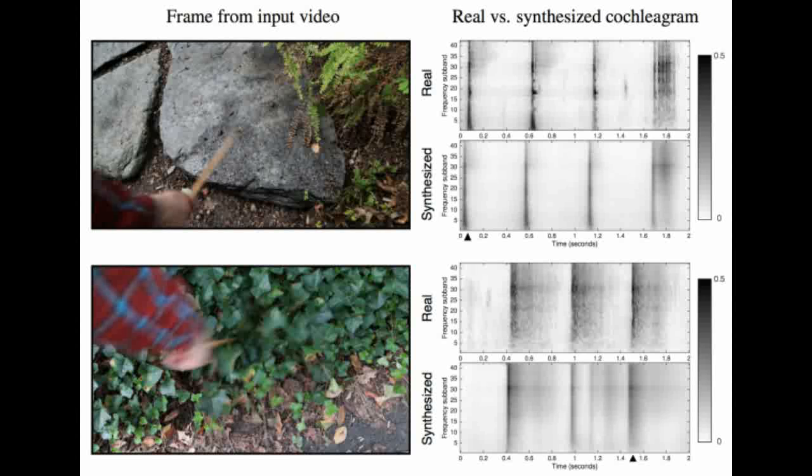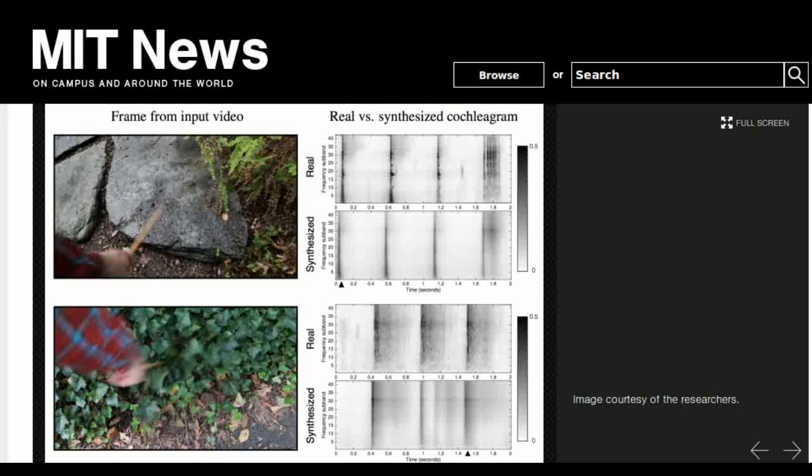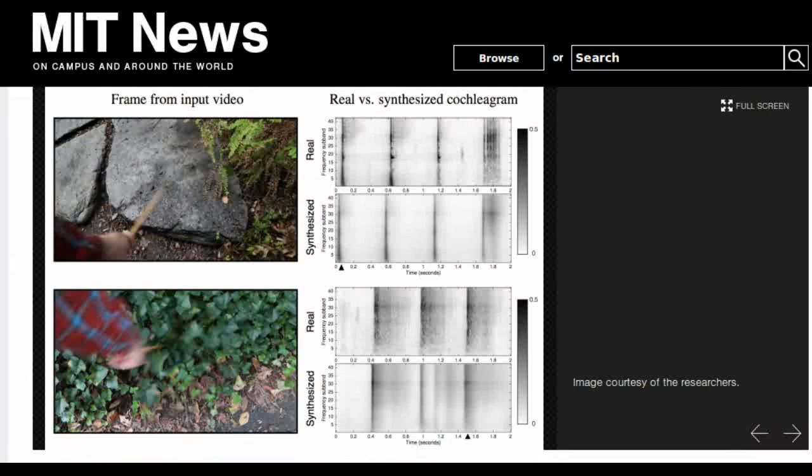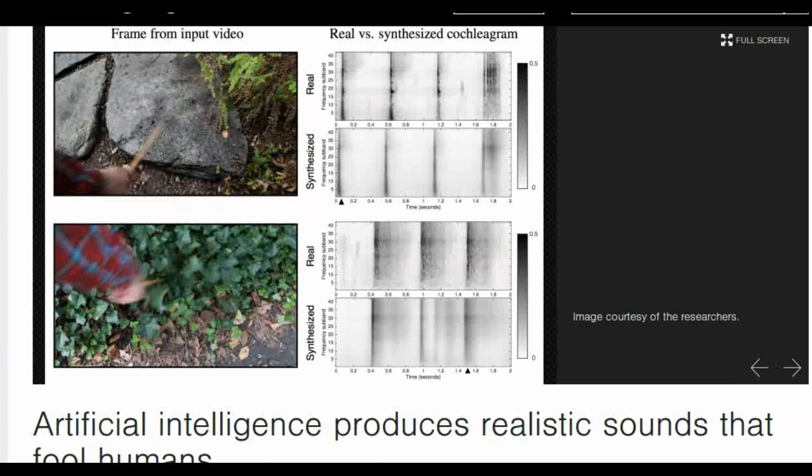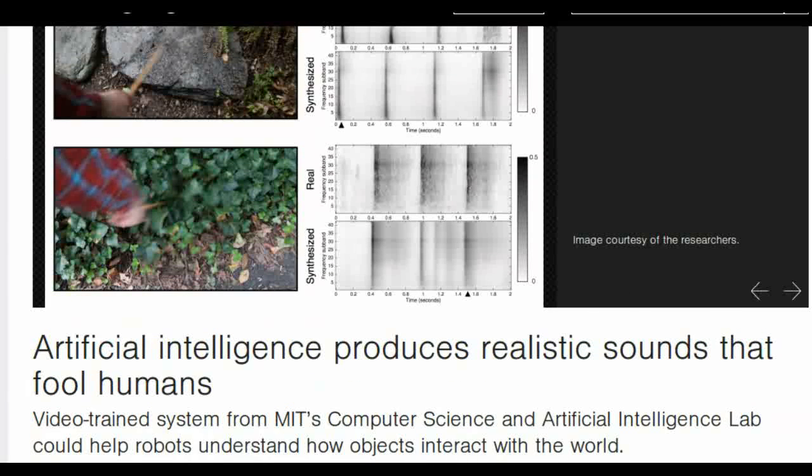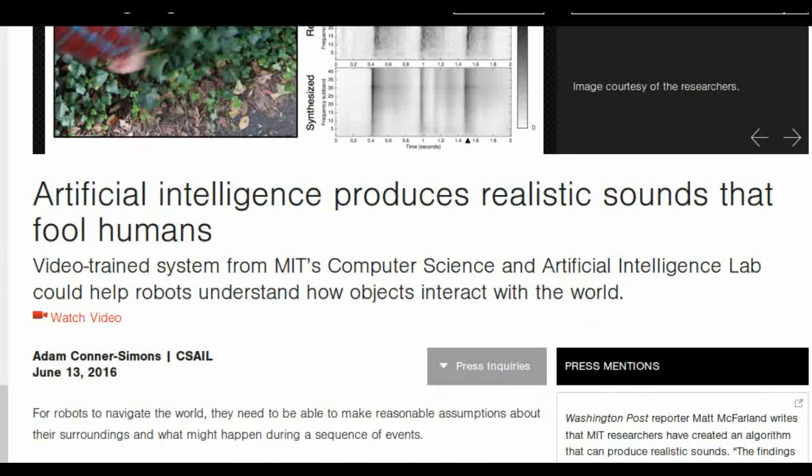MIT researchers have demonstrated an algorithm that has effectively learned how to predict sound. When shown a silent video clip of an object being hit, the algorithm can produce a sound for the hit that is realistic enough to fool human viewers.